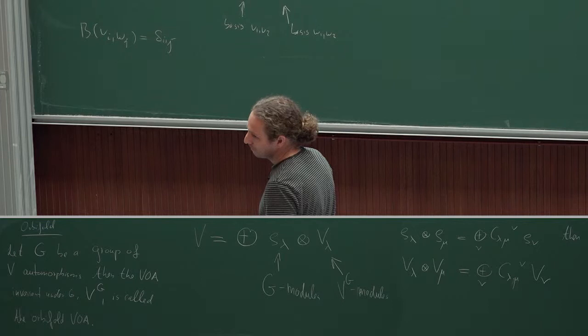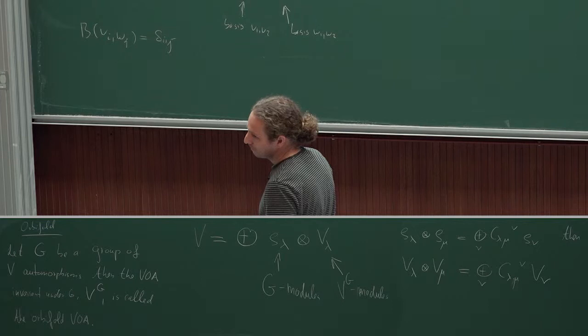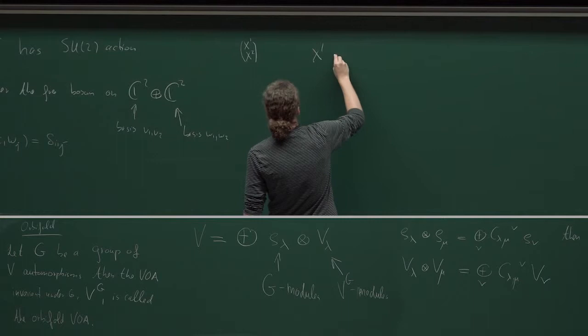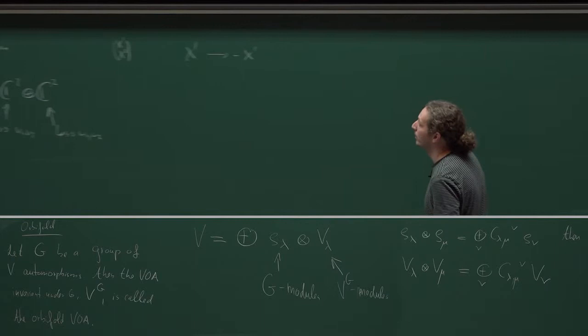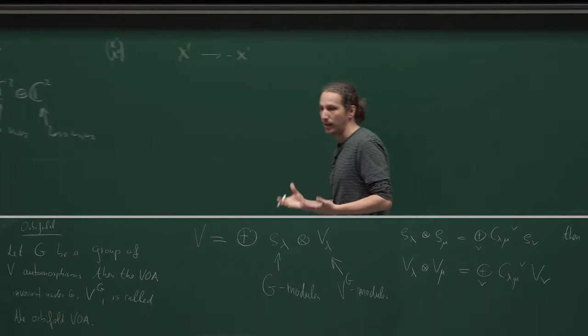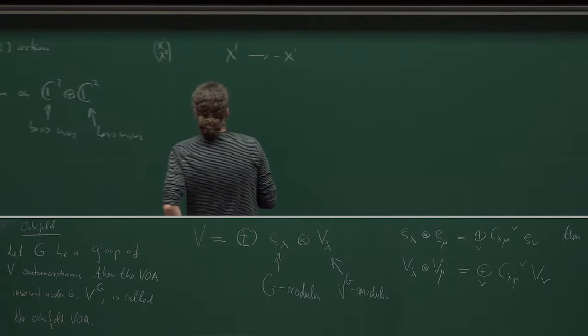Maybe you could say, for example, if you just take a Z2 orbifold? Yes, let's do a Z2 orbifold. We can of course also take a Z2 orbifold, just mapping every Heisenberg field to minus itself. And for this, we can just take a single free boson — we don't need to take many of them.